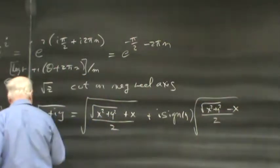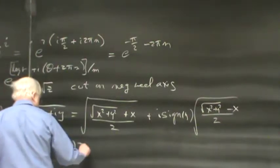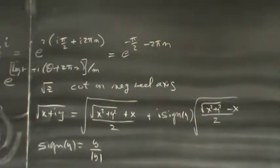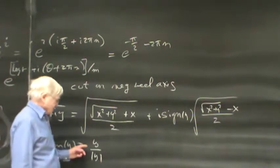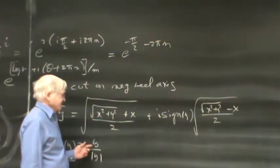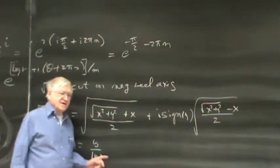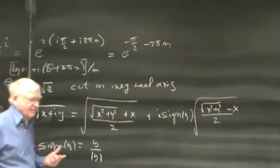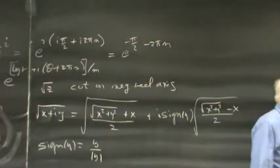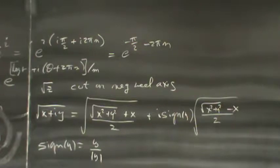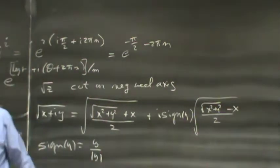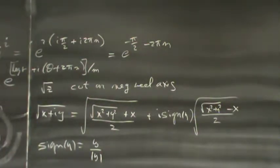Of course it always comes up: what if y is zero? Well, it's plus or minus one — you can take your choice. If you're worried about the choice, remember that in measure theory it doesn't make any difference, since the real axis is a set of measure zero. The sign(y) here serves the purpose of the plus or minus that you normally get whenever you take a square root.